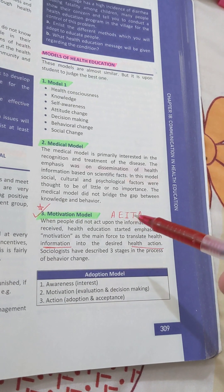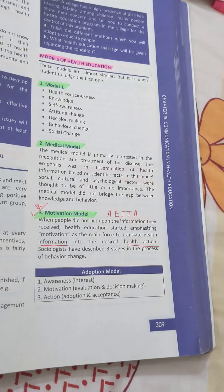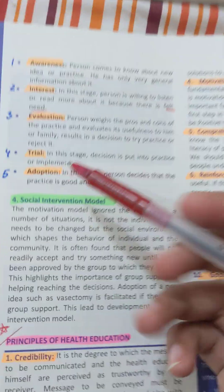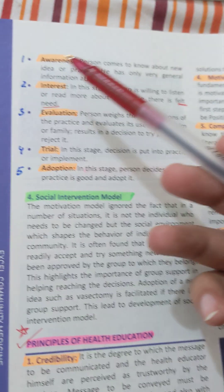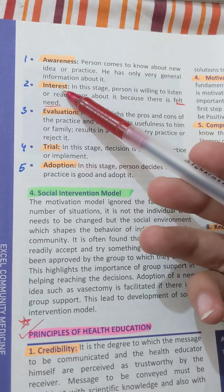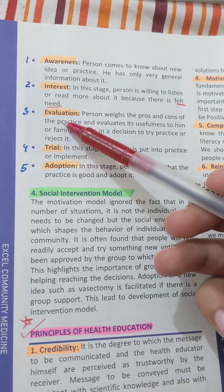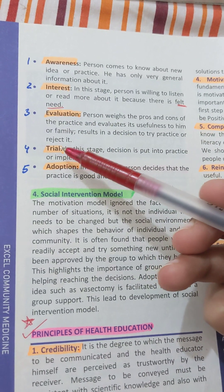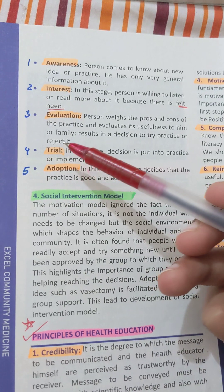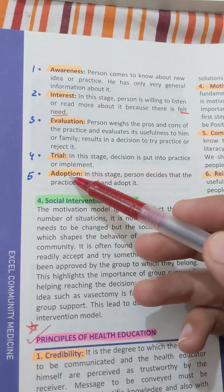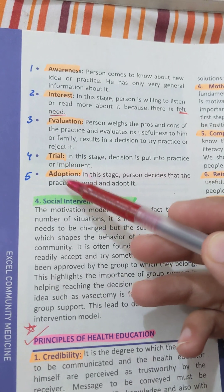I is for interest, T is for trial, and A is for acceptance — or rather, A is for adoption. The ITA model relates to awareness: awareness develops interest in the process of behavior change. Interest is evaluated, then acted upon through trial. And if you think it's good, then you adopt the method of behavior change.